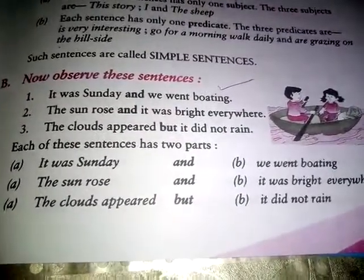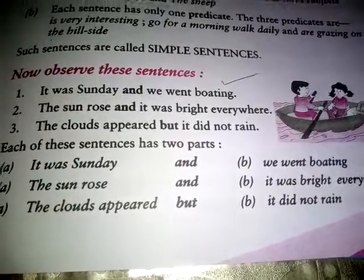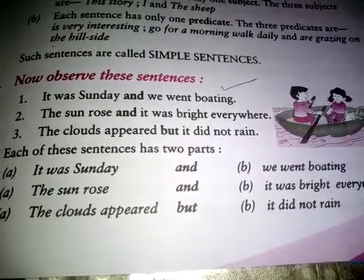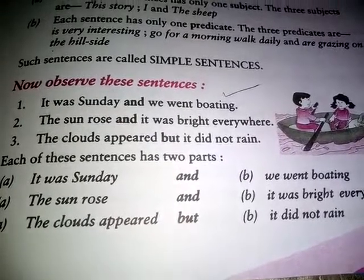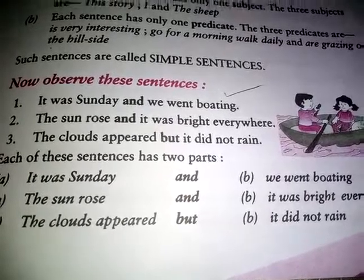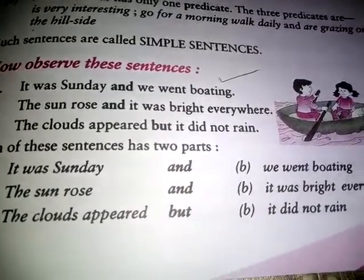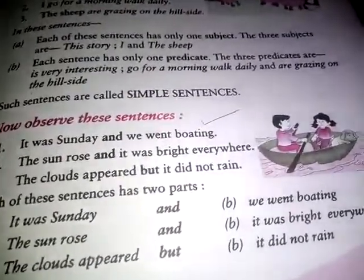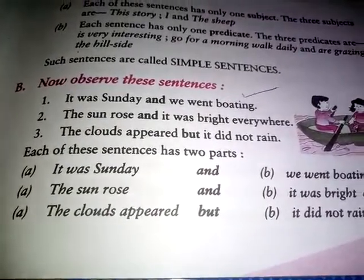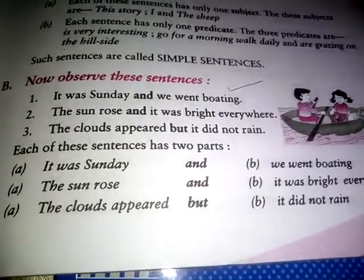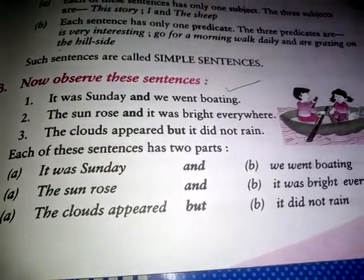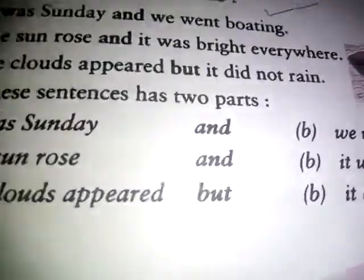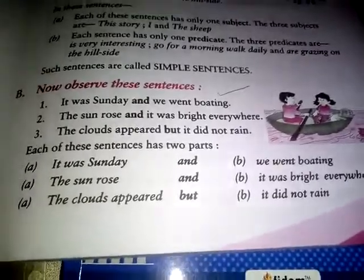Now observe these sentences: 'It was Sunday and we went voting.' 'The sun rose and it was bright everywhere.' 'The clouds appeared but it did not rain.' सूरज निकला और चारों तरफ उसकी रोशनी फैल गई। बादल आए लेकिन बारिश नहीं हुई। यह दो-दो sentences हैं जिनको different words जैसे 'and' और 'but' के साथ join किया गया है।